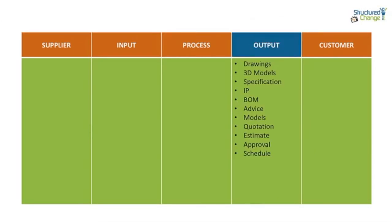From an engineering perspective, they've identified what they produce on a day-to-day basis. We've got drawings, models, specs, intellectual property of some description, bill of materials — which is what BOM stands for — could be advice, other models. So we've got 3D models up here and other calculation models. Quotations, pointing to sales. Estimates, pointing to sales or management. Approvals of some description. And schedules. Going through that output list, you get a view that suggests they've got quite a diverse range of outputs they need to produce.